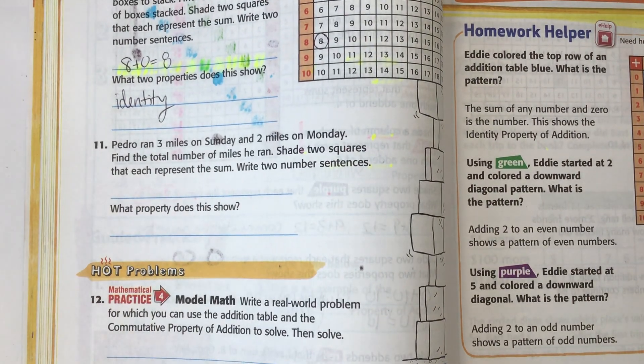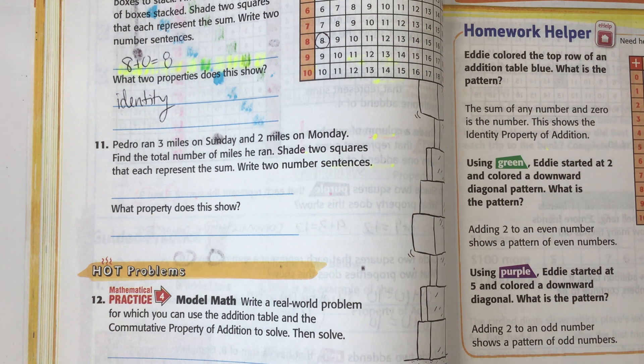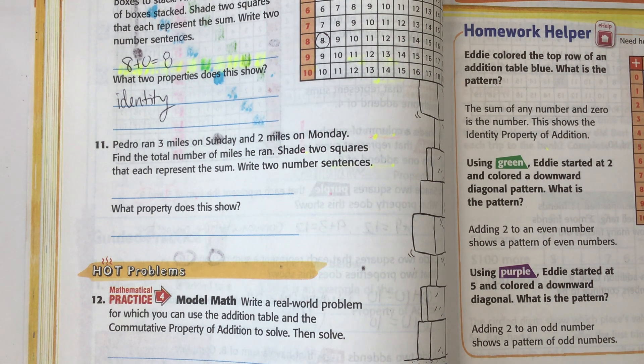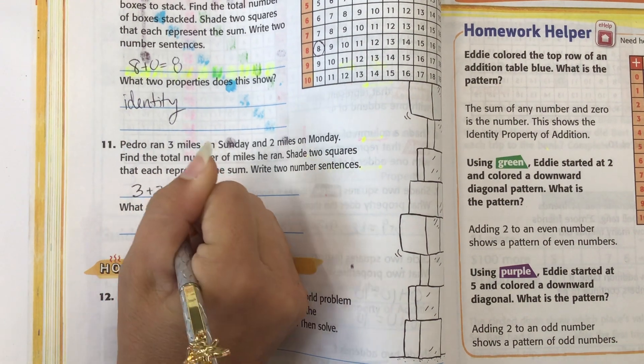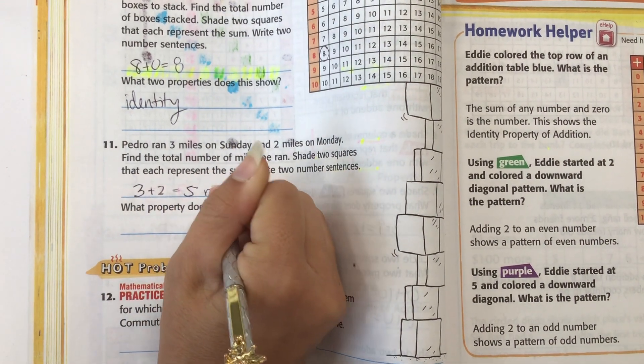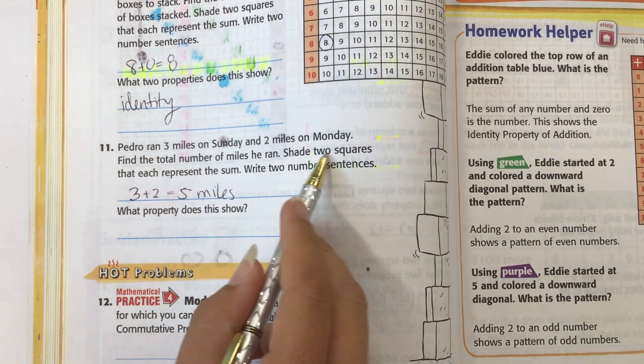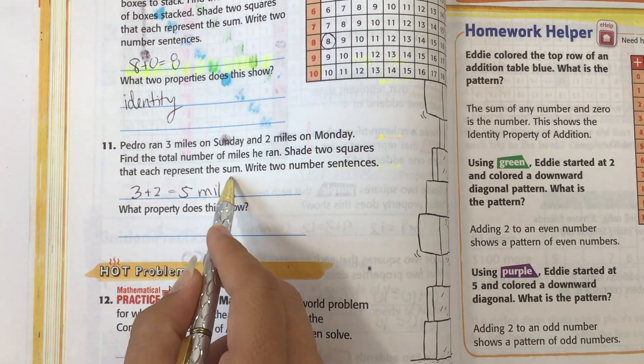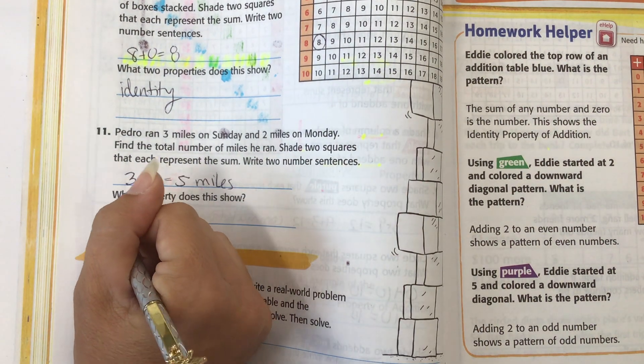Pedro ran three miles on Sunday and two miles on Monday. Find the total number of miles he ran. So let's do that part first. Three miles and two miles equals five miles. Find the total number of miles, five miles. Shade two squares that each represent the sum. Write two number sentences. So this is called the commutative property.